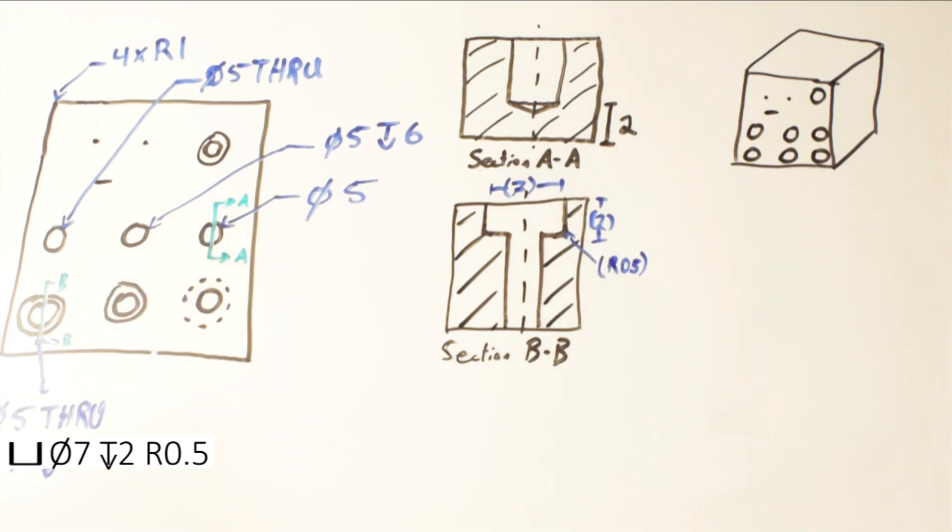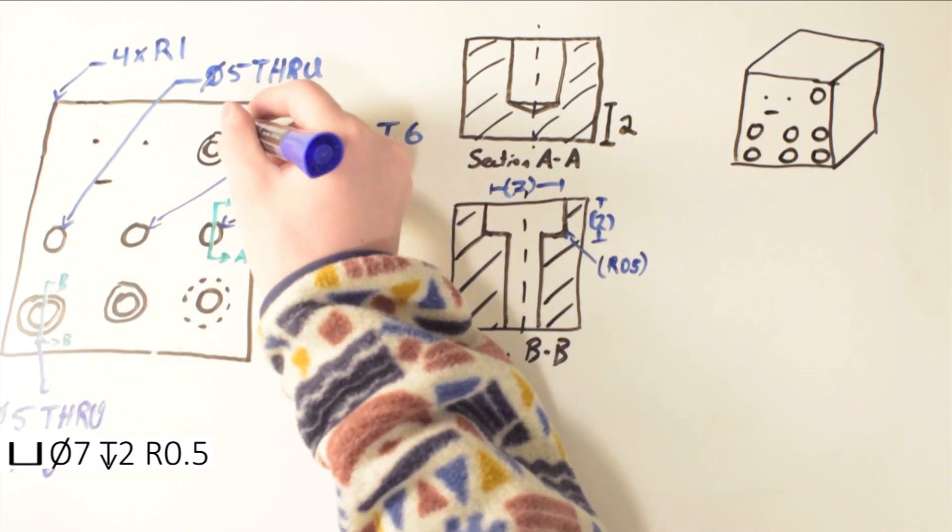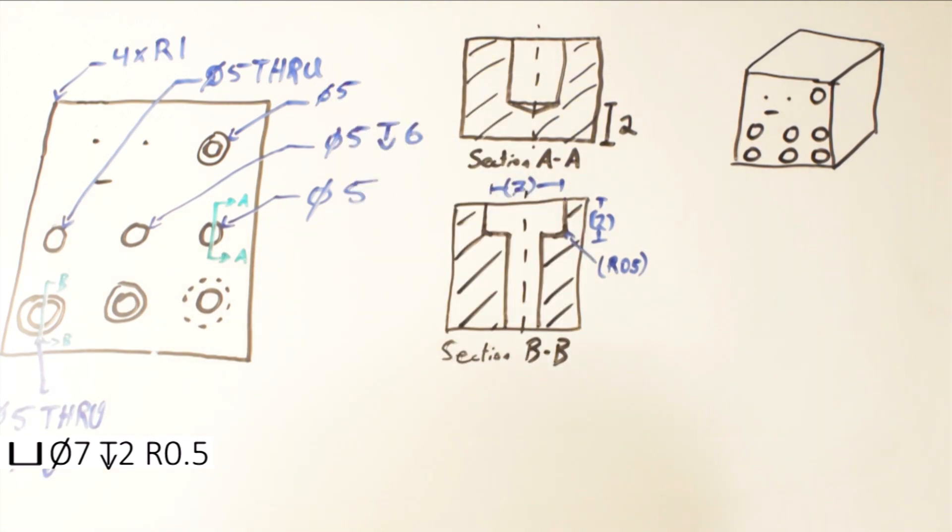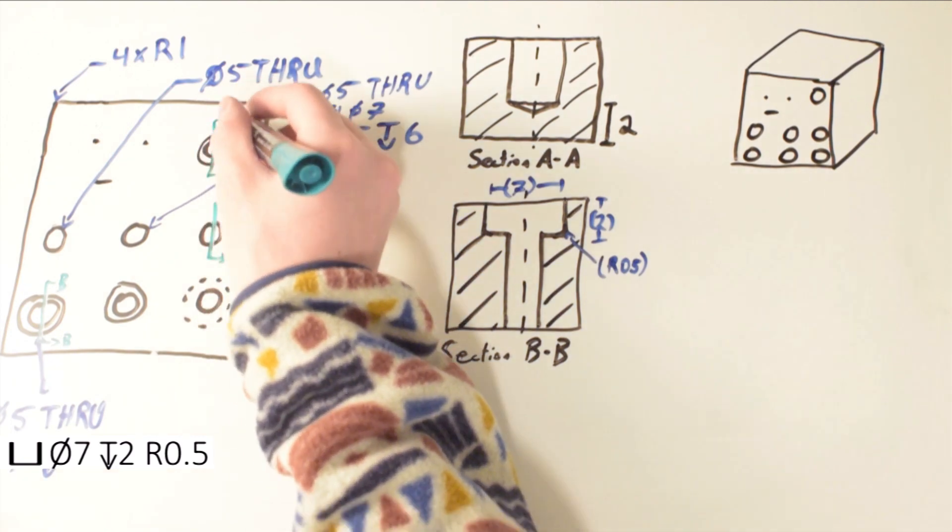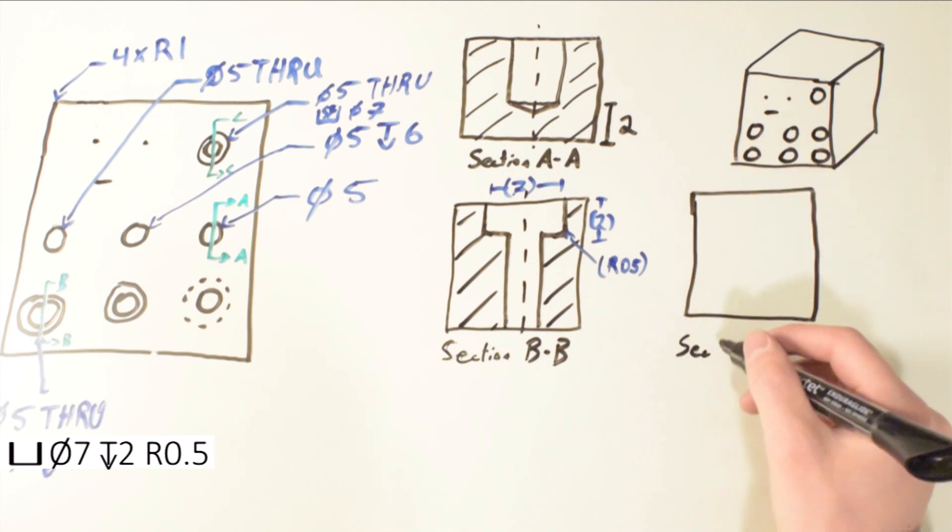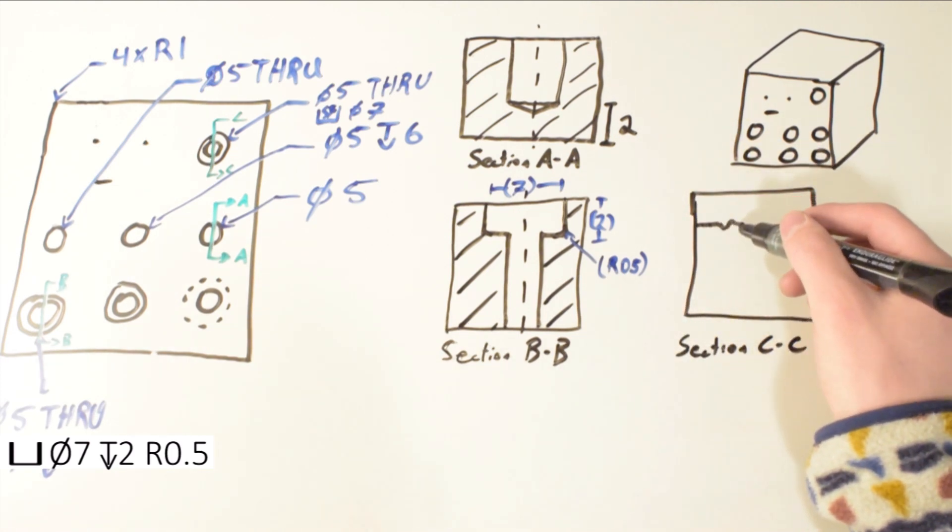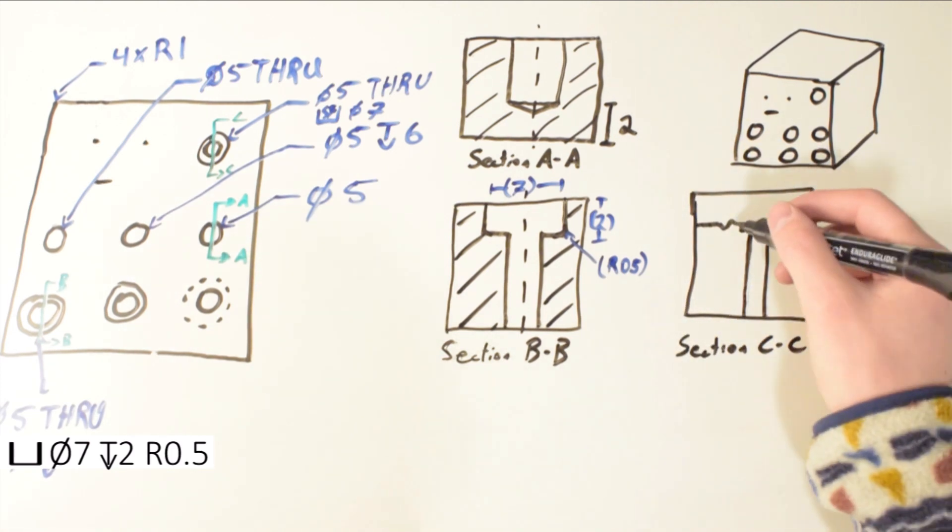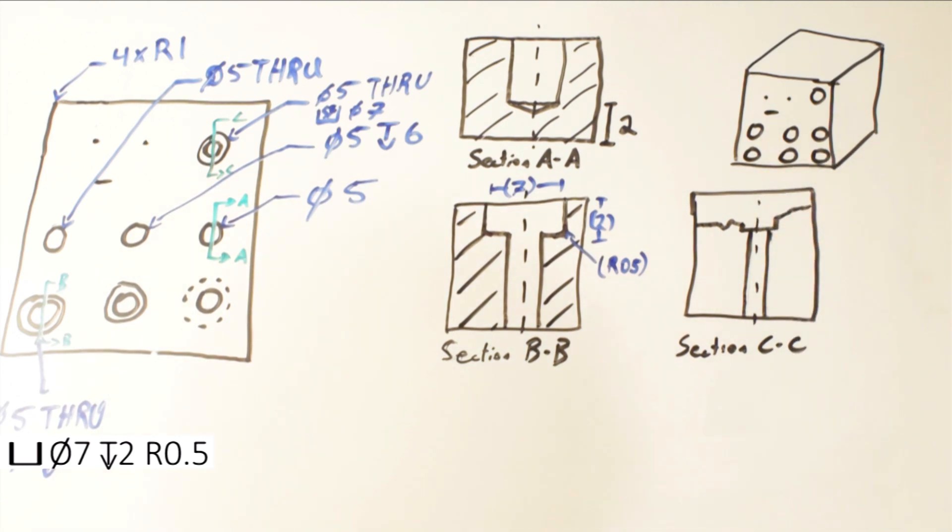Spot faces are another thing you may see, which is a counterbore symbol with SF on the inside of it. If a spot face has a depth beside it, it's essentially the same as a counterbore and therefore in my opinion useless. Where it is useful is when no depth is specified. In this case, it means that you continue boring down until the diameter is fully machined. This is useful when you're trying to dimension on cast parts and you don't actually know what the surface is going to look like.